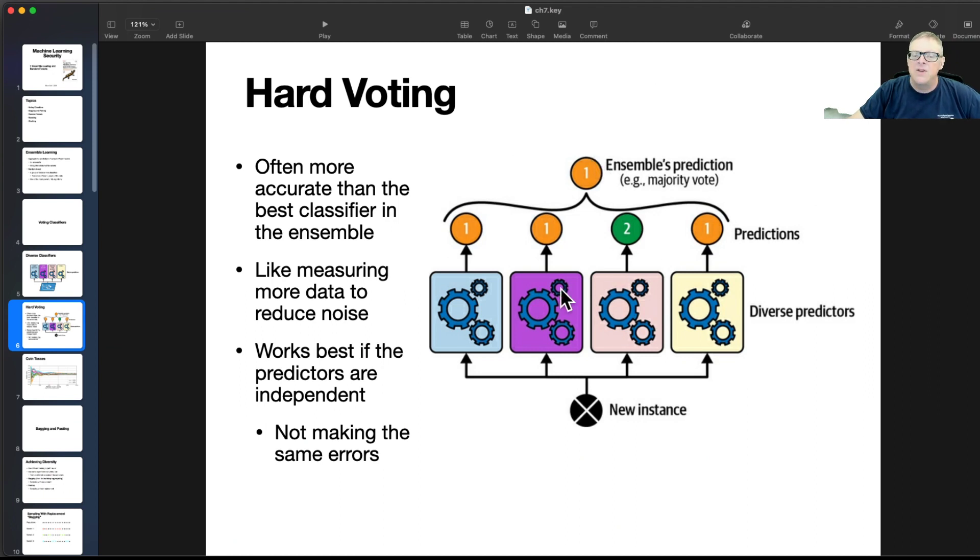So these three vote category one, this one votes category two, so you take category two. And, of course, statistically, if these things all have a certain accuracy, then combining several of them should improve the accuracy if they are independent. Now, if they're all making the same errors, then it doesn't improve things.